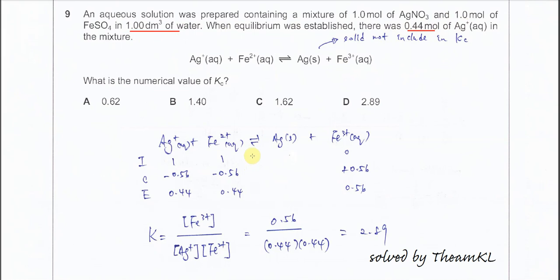First you need to construct the ICE table. Silver ion: 1 mole. Fe2+: 1 mole. Fe3+: 0.